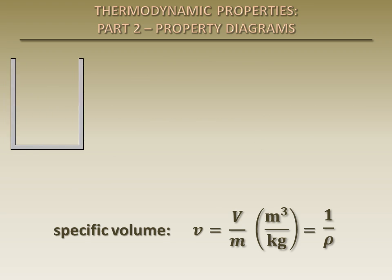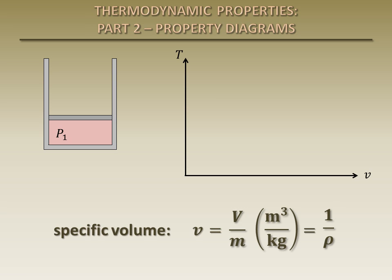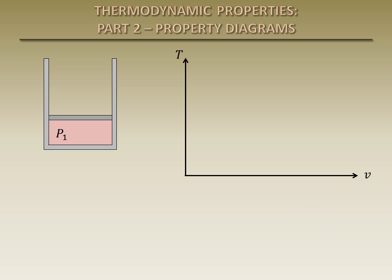Consider a cylindrical vessel which contains some amount of a pure substance in the liquid phase. Suppose that a piston is allowed to rest on the liquid such that it is at some pressure P-1. We want to plot the temperature of this substance as a function of its specific volume as energy is added to it and it changes phases. This liquid is at some initial temperature T-1 and has an initial specific volume V-1. At this state, it is called a compressed liquid.